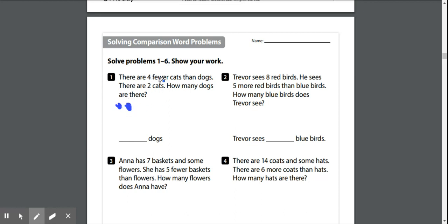There's my cats, and I know that there are four fewer cats than dogs, so I should know that there are two dogs as well. There's my dogs, and I know that there are four fewer cats, so I'm going to go ahead and draw four in my dog's column.